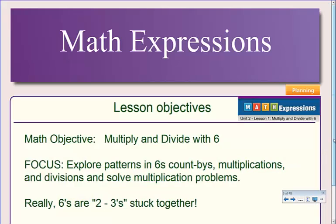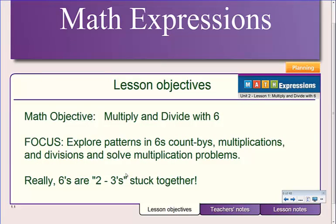Multiplying and dividing with six. Putting two threes together, you're going to get the sixes. So three times two is six. Put two sixes together, or put two threes together and you get six. And you can do that also with four times three is twelve. Put two twelves together and you get six times four. But we're going to explore the patterns in six count-bys, multiplications, and divisions, and solve multiplication problems.